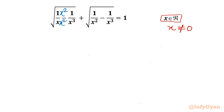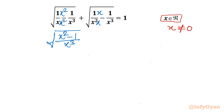In the numerator and denominator I multiplied with x². Similarly I will multiply the second term's numerator and denominator with x. Now you can see it is: square root of (x² − 1) divided by x³, plus square root of (x − 1) divided by x³.